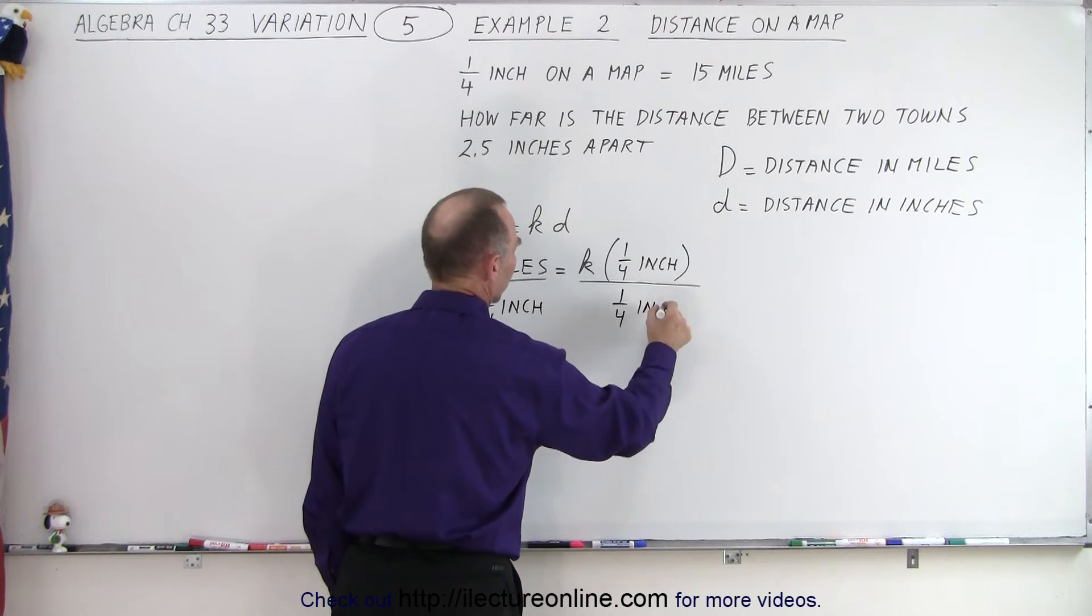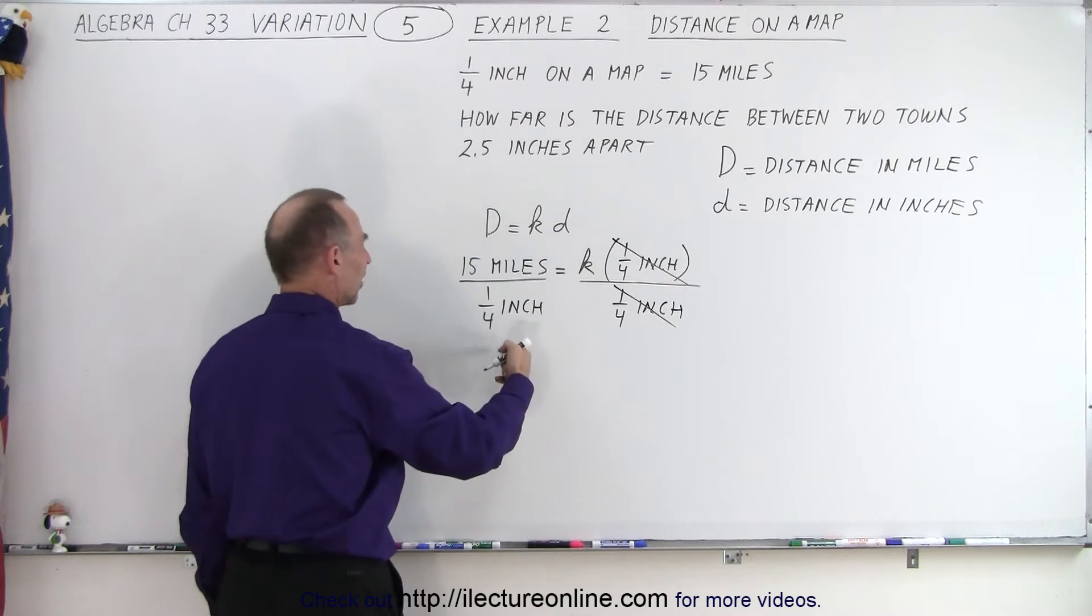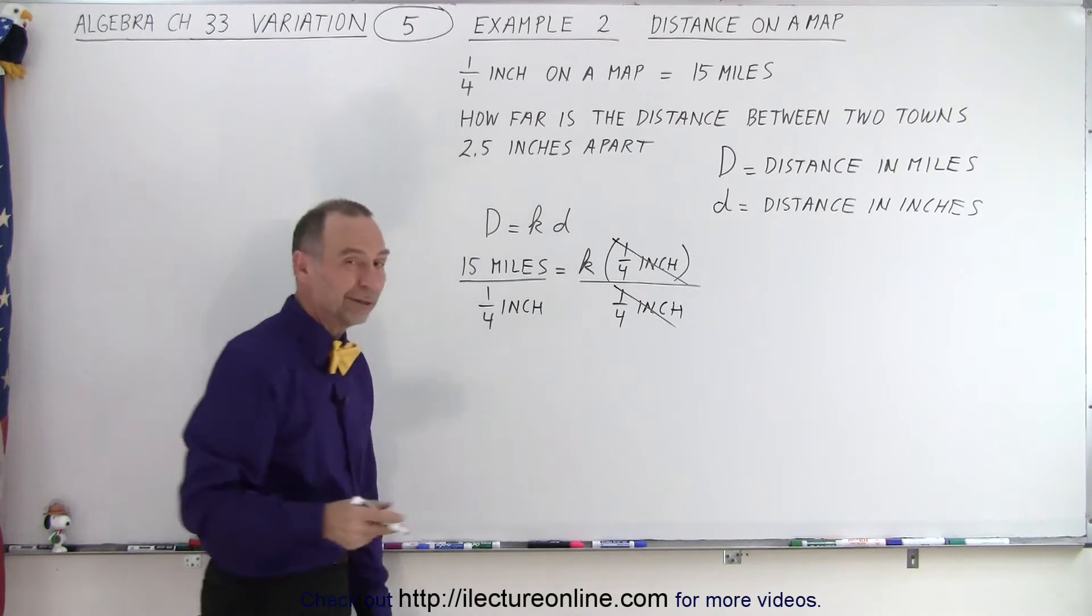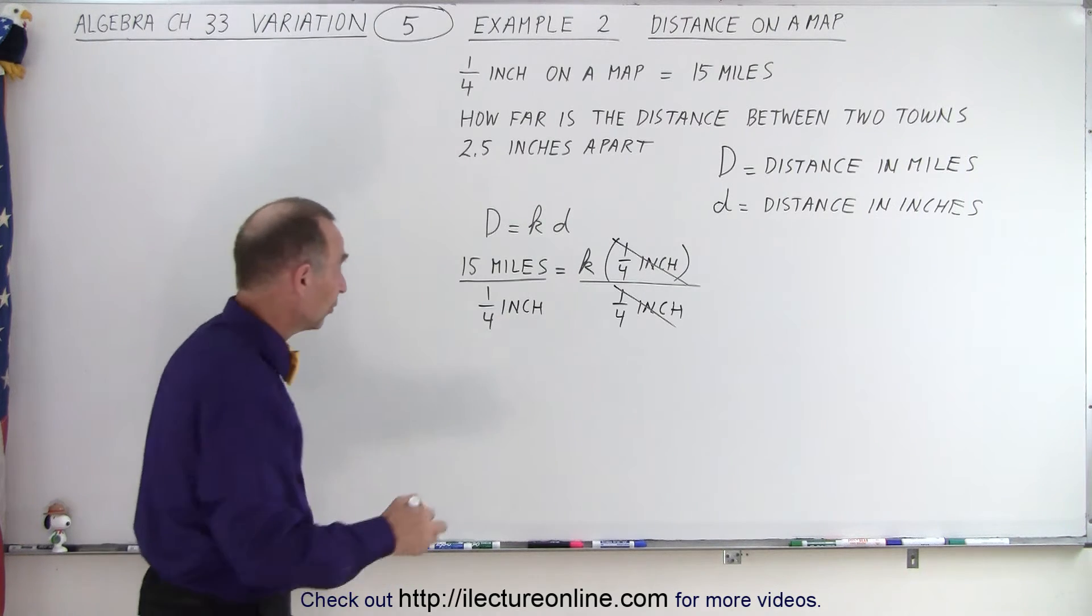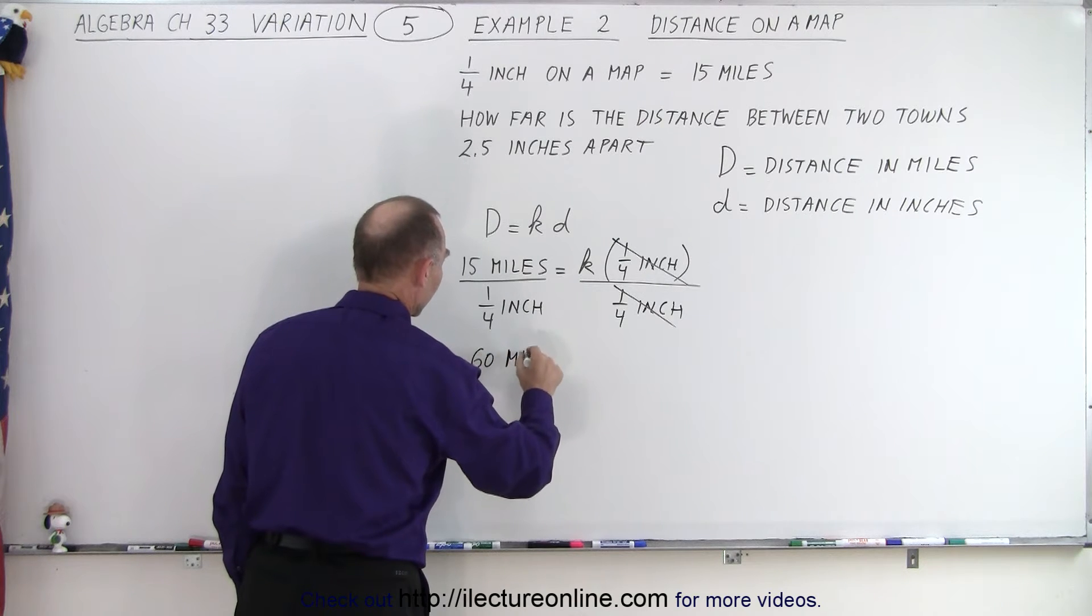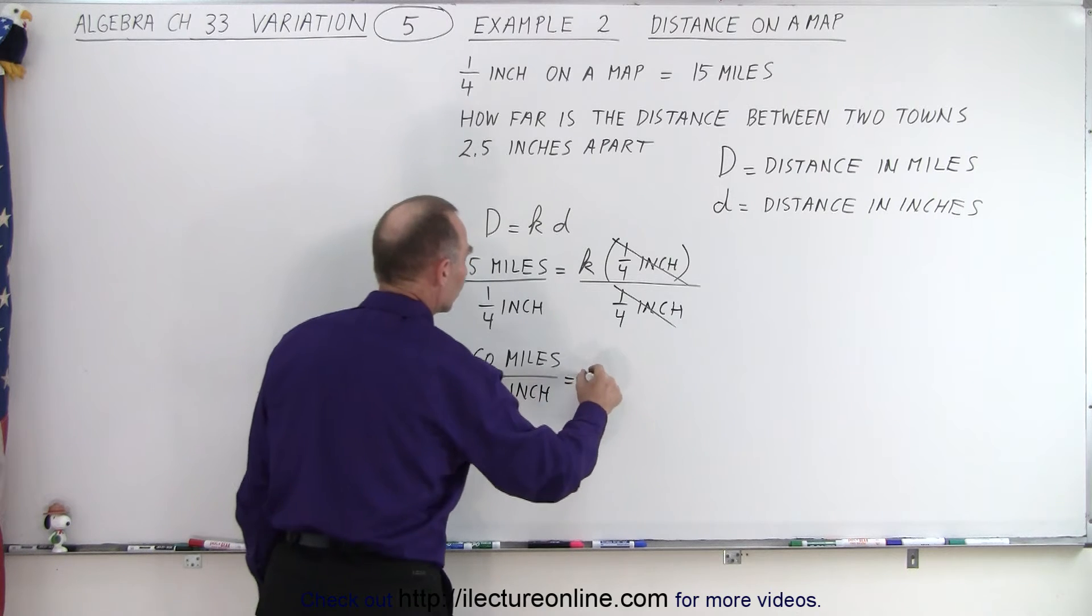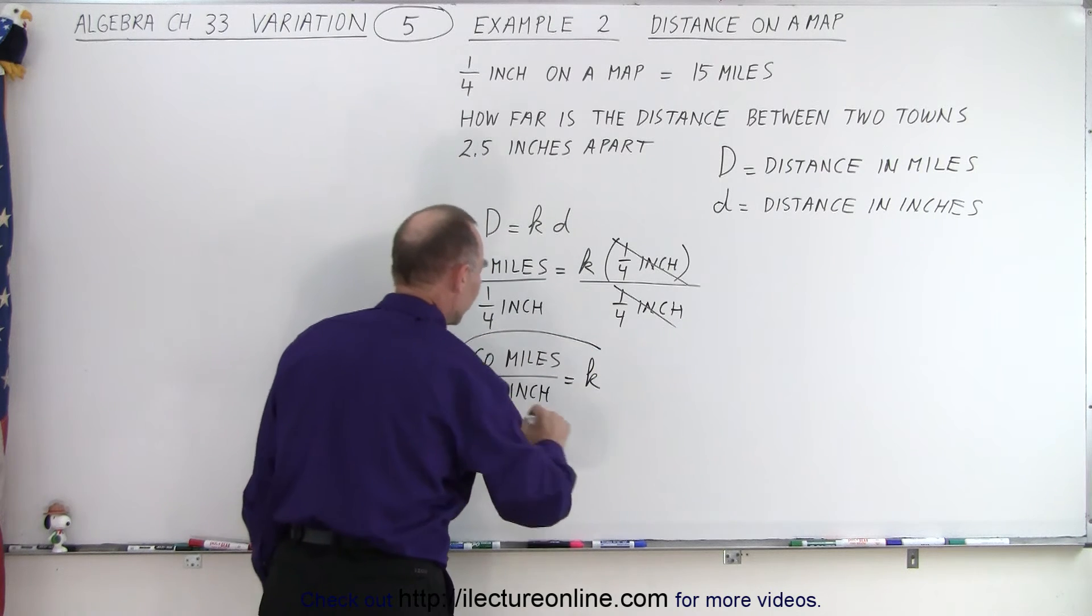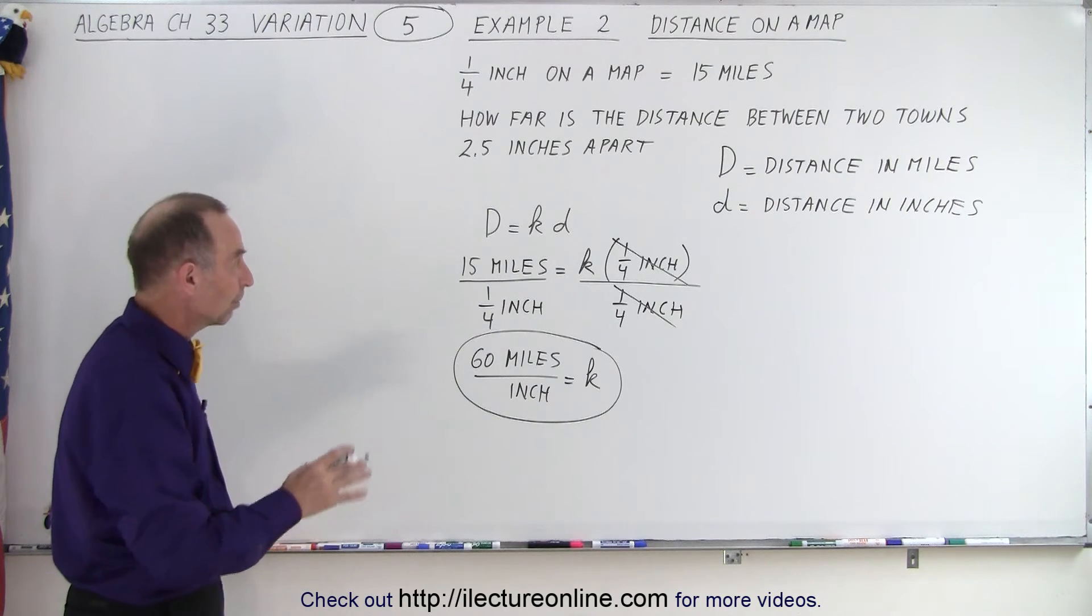Notice on the right side the quarter of an inch cancels out, and on the left side we have 15 divided by a quarter. Of course, when we divide by fractions, it's the same as multiplying by its inverse, so that's 15 times 4, or 60 miles per inch equals k.